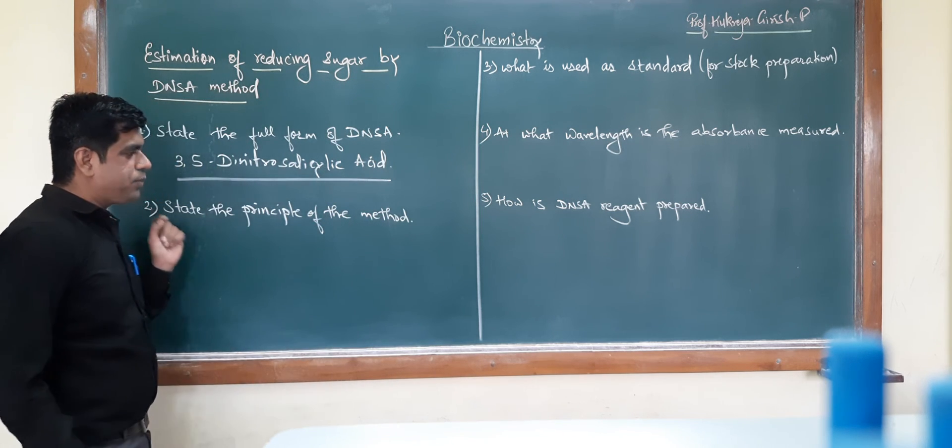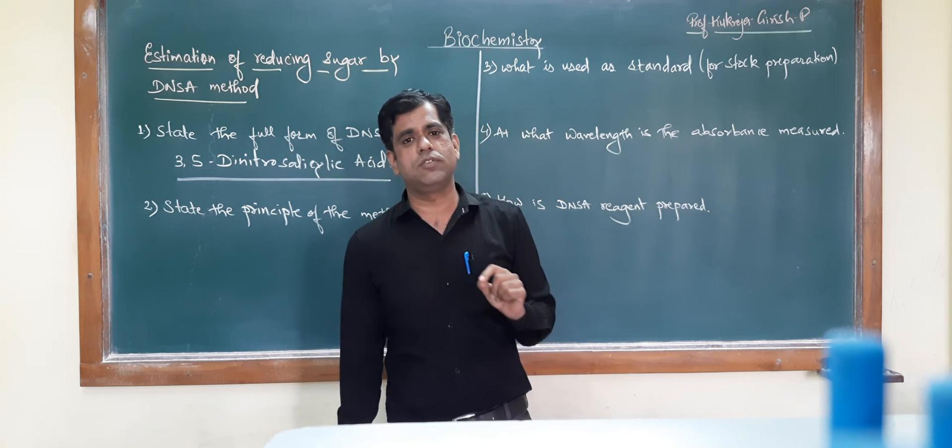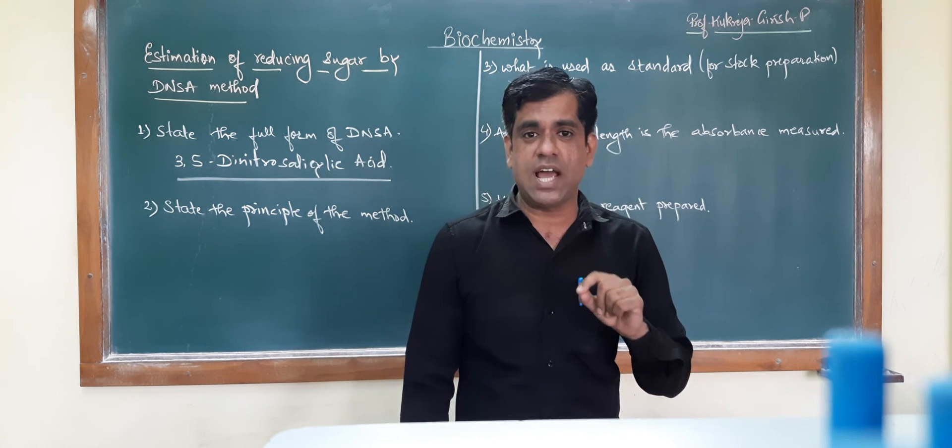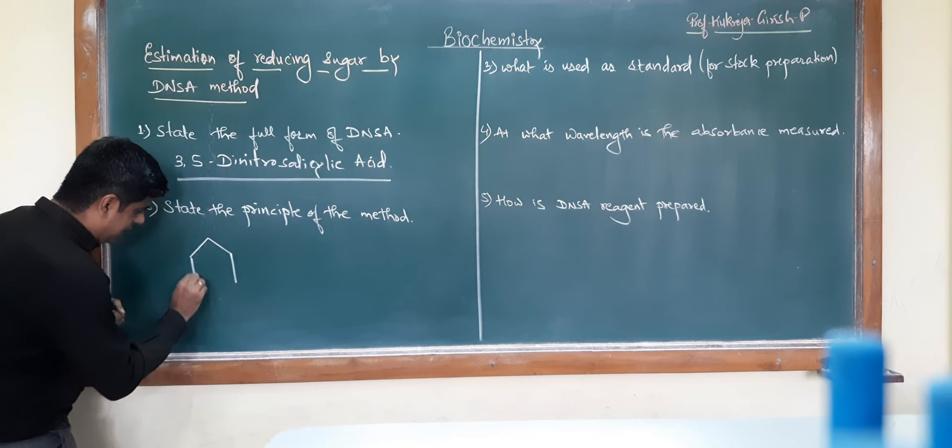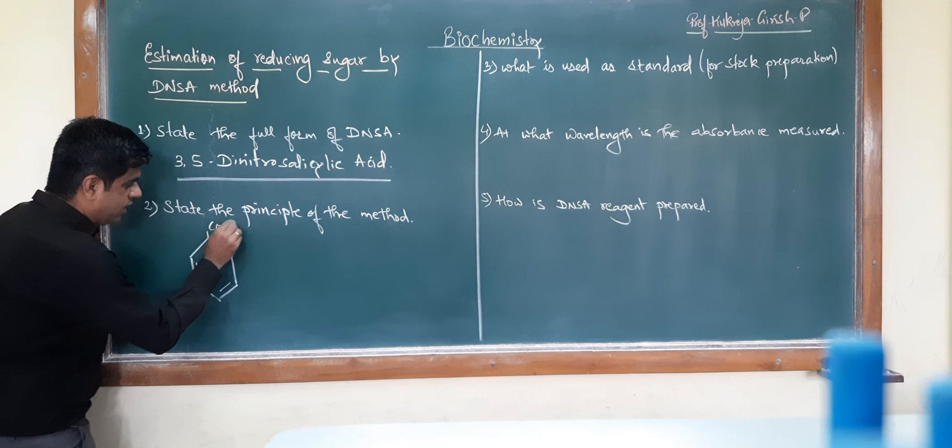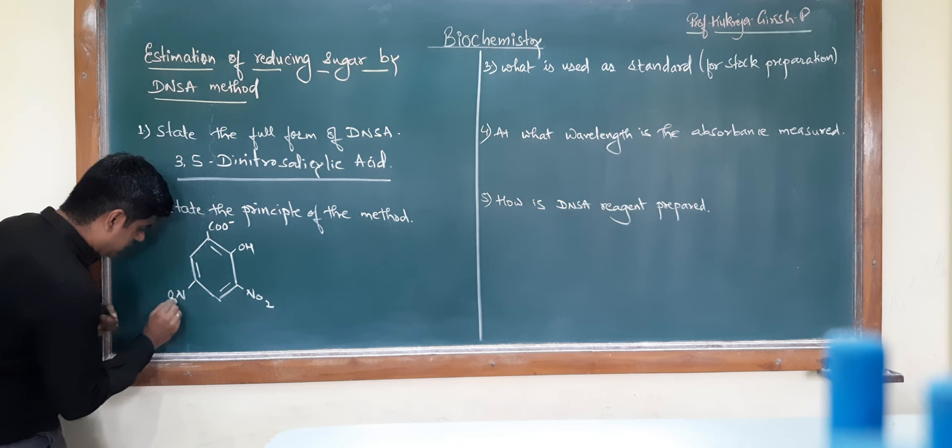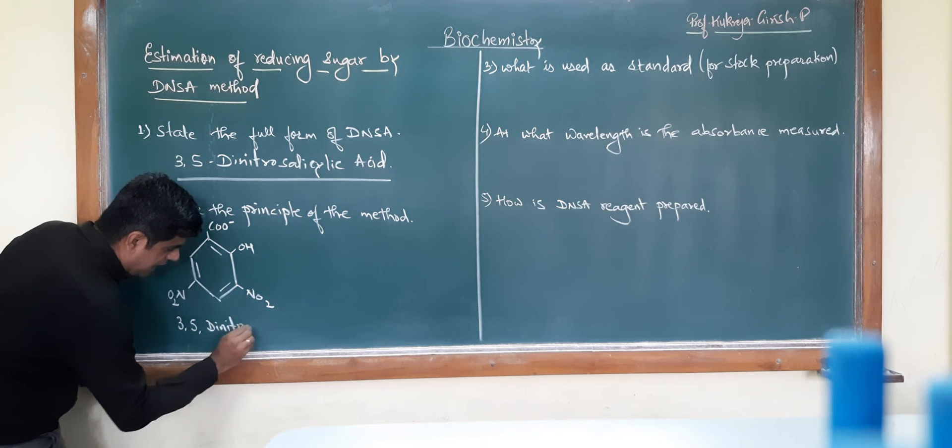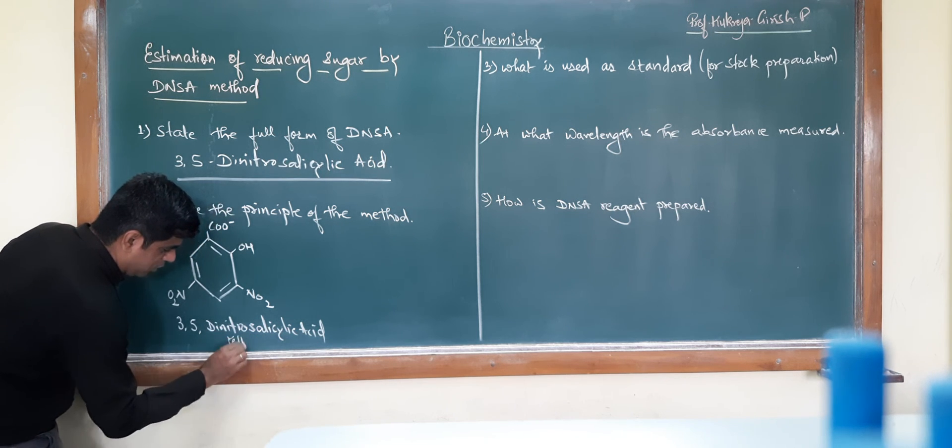The next question asks to state the principle of this particular method. As the name suggests, the method is used for estimation of reducing sugars - it estimates the sugars which have reducing properties. If you look at the structure of typical DNSA, this particular 3,5-dinitrosalicylic acid has a nitro group here and another nitro group here. This 3,5-dinitrosalicylic acid is somewhat yellowish in color.